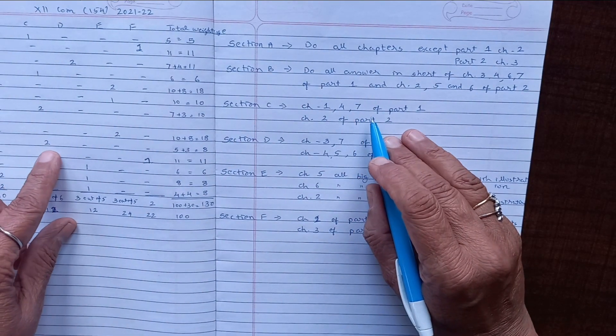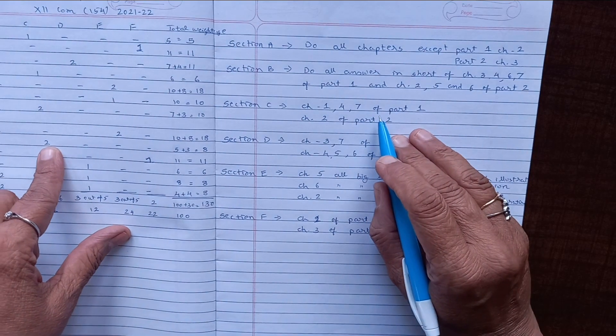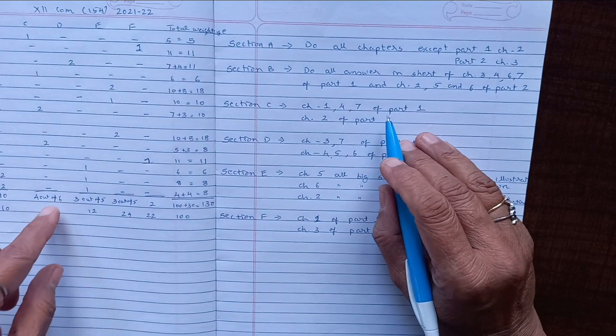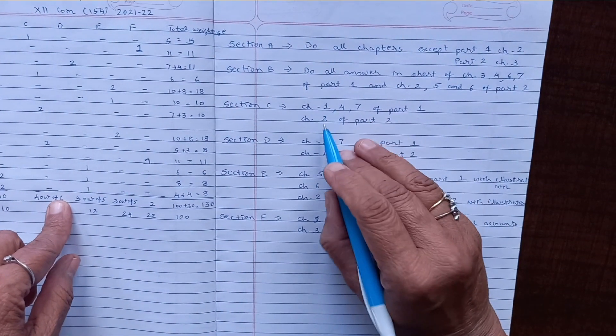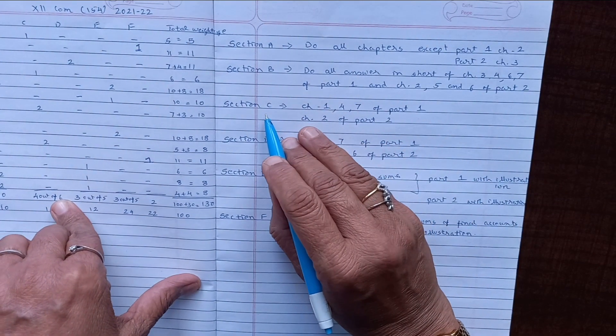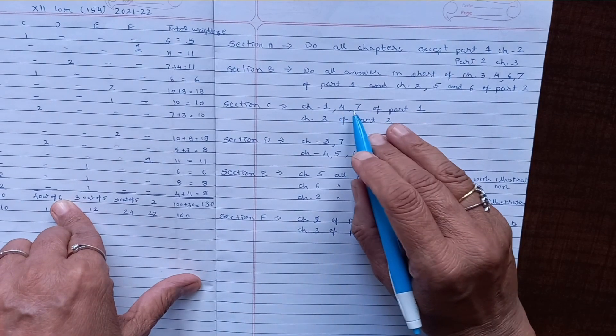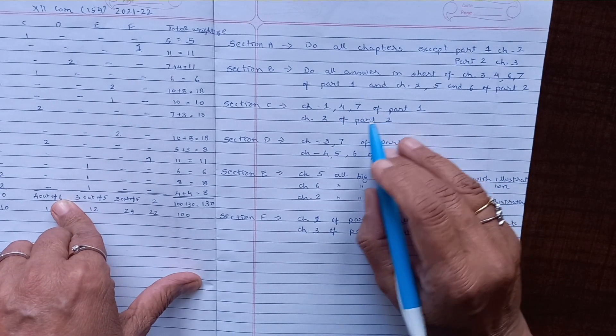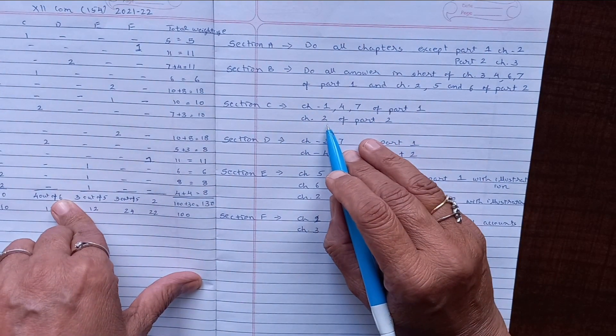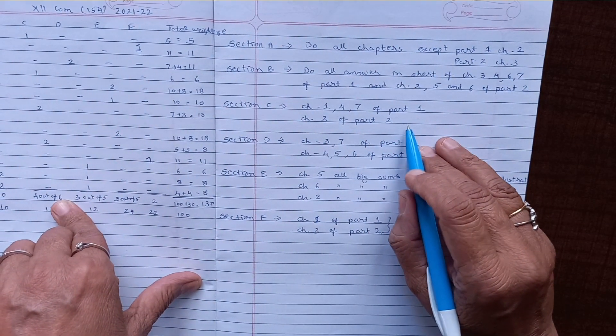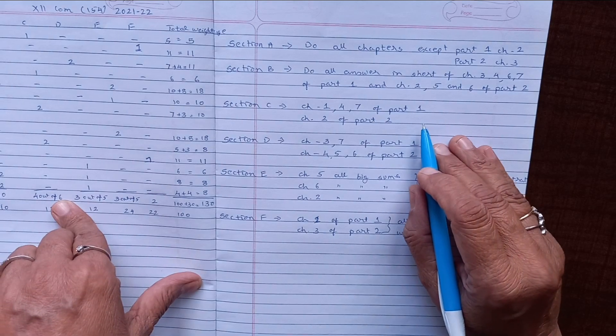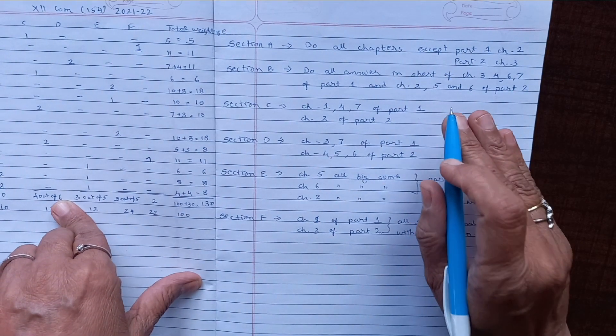The repeated questions they have asked from the dissolution chapter and from part two, the debenture chapter. Like this, they are going to make six questions from four chapters. So you have to do C section: all the questions of chapter 1, 4, 7 of part one, and chapter 2 of part two. All illustrations and all the exercise C section questions of these particular chapters.